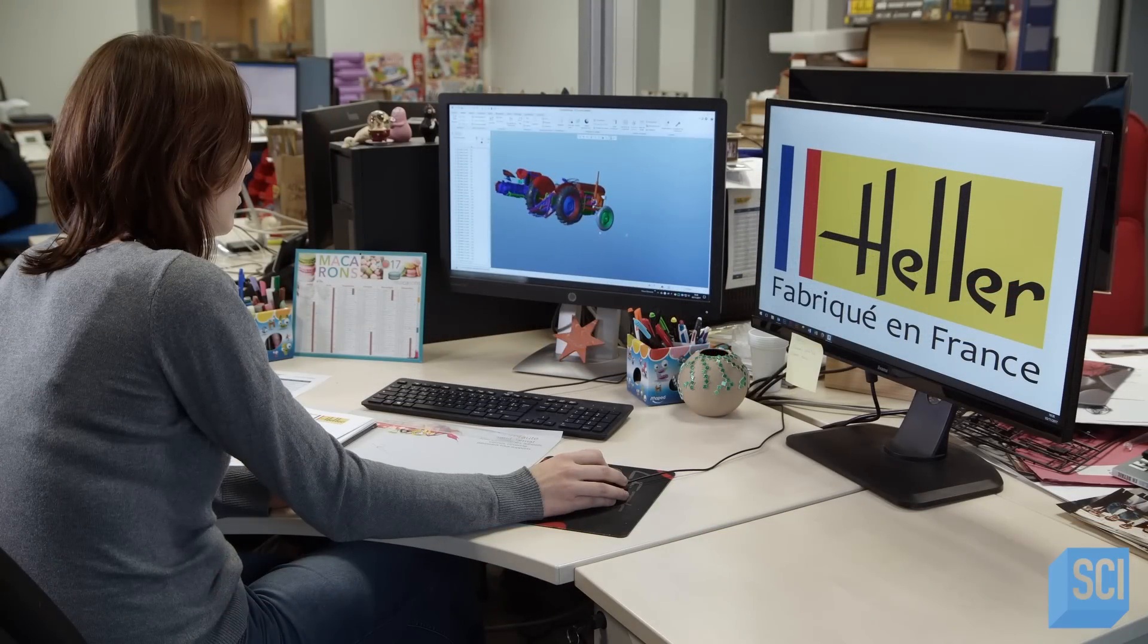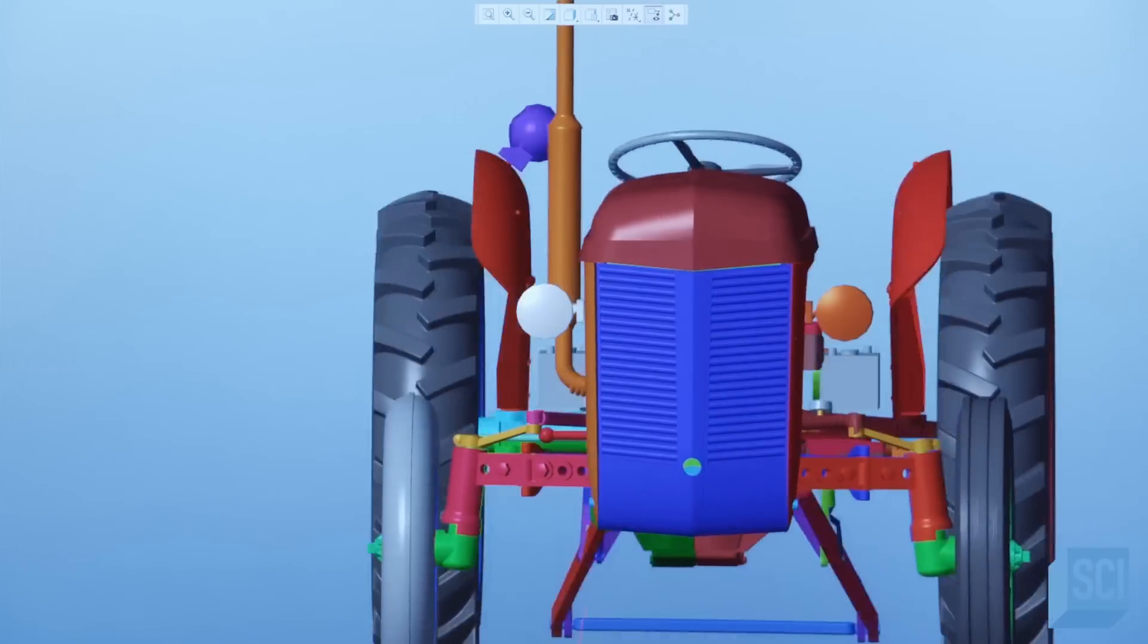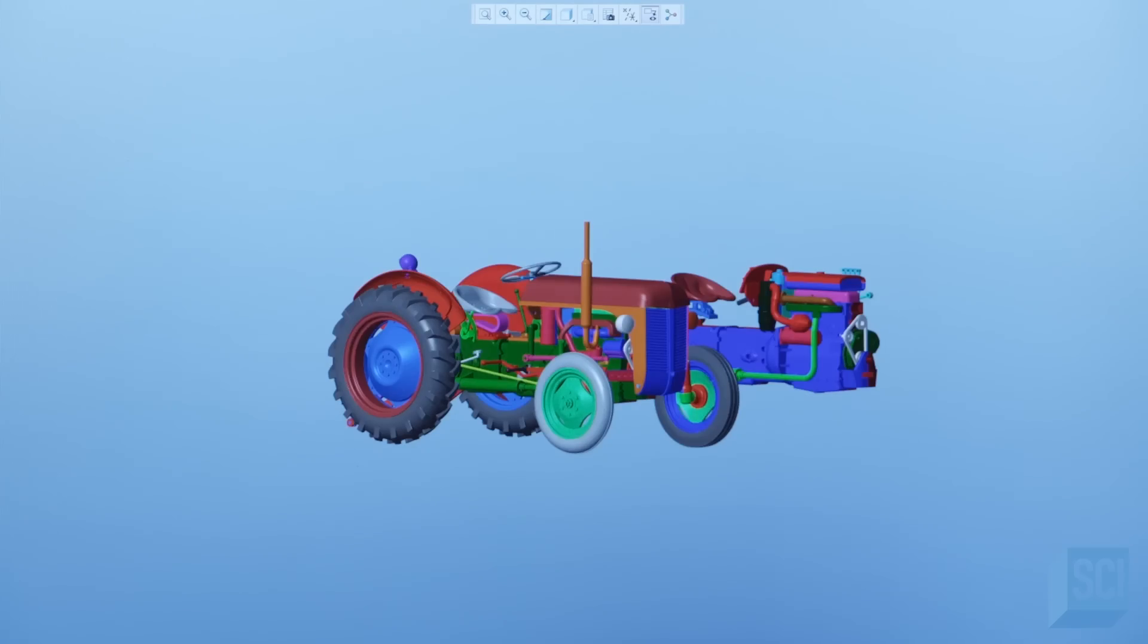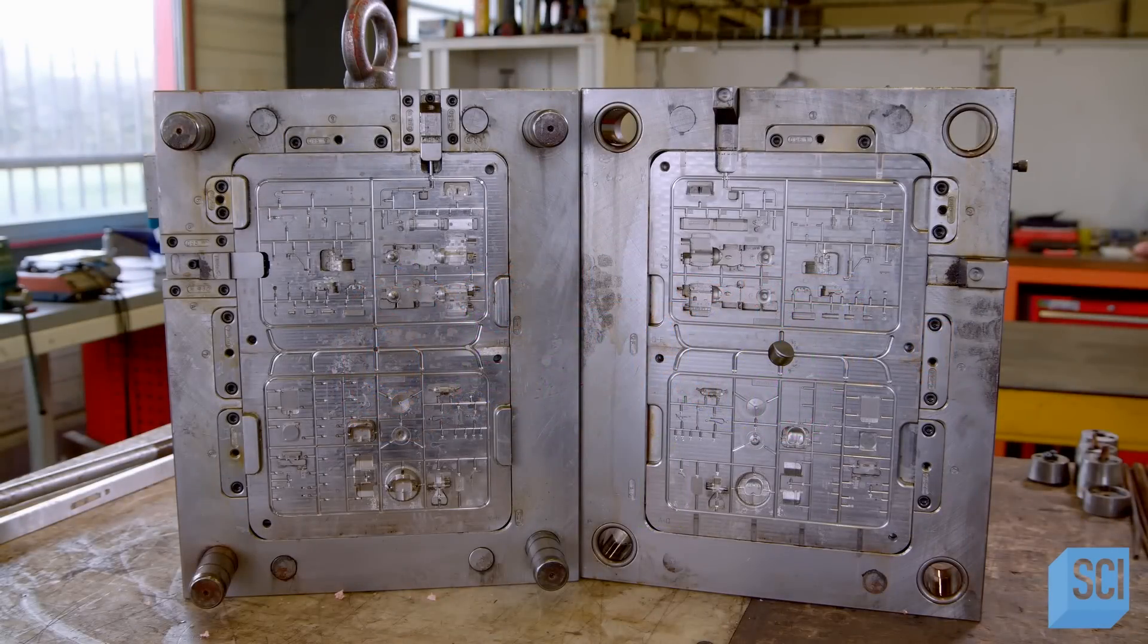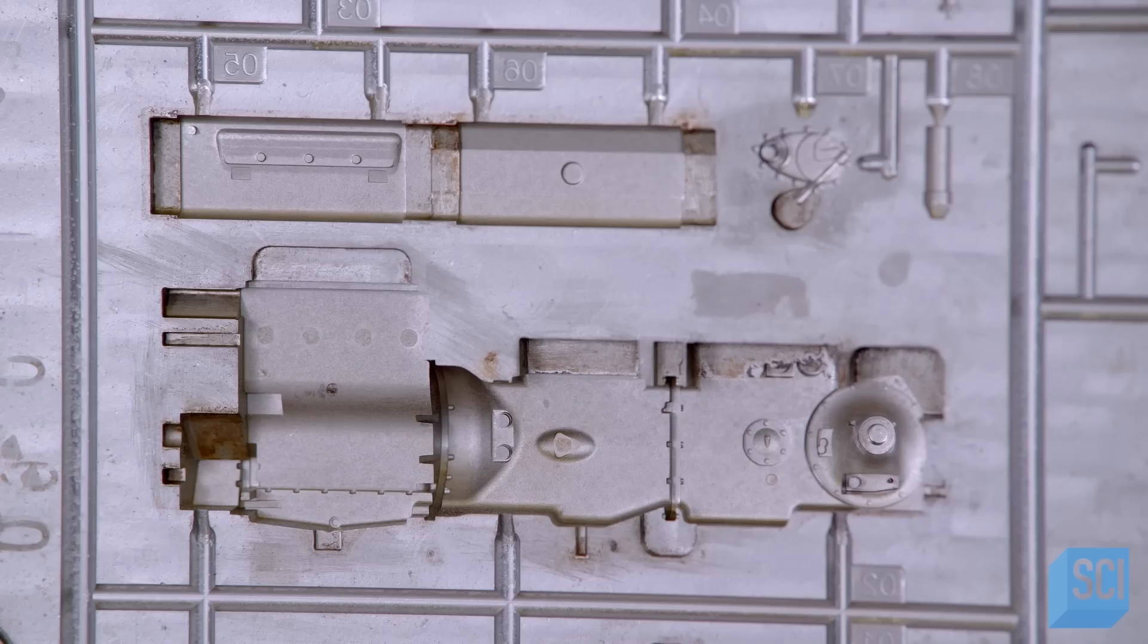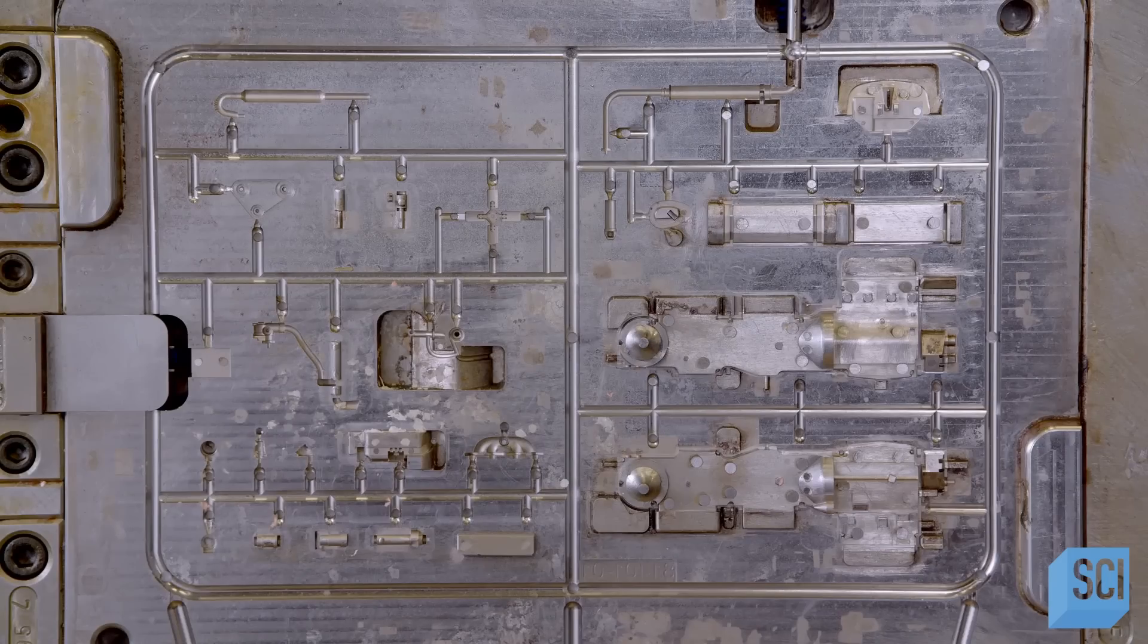Each model kit starts with extensive research and design, a process that can take up to a year to complete and cost up to $100,000. Using the computer design, a set of steel molds is made for every piece of the kit.